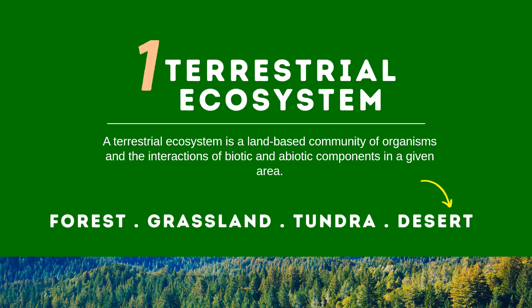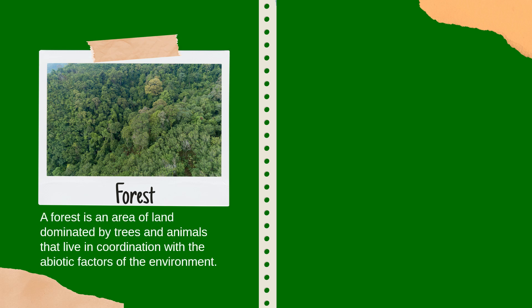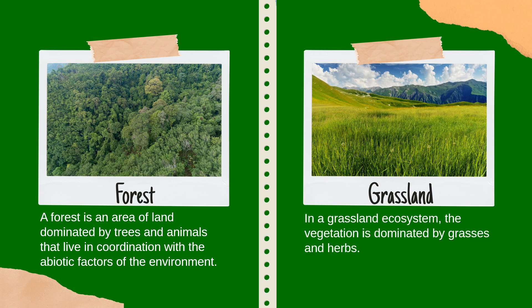Terrestrial ecosystems can be divided into forest, grasslands, tundra, and deserts. First is the forest — it is the community of trees where you will find lots of trees and animals that live in and interact with their environment. Second is grasslands, which consist of herbs and grasses, so these are called the grassland ecosystem.